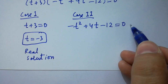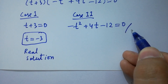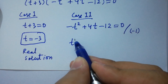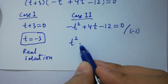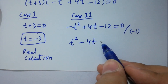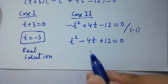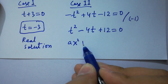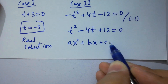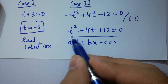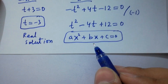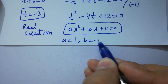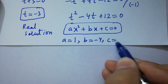From case 2: minus t-squared plus 4t minus 12 equal to 0. Dividing by minus 1, we have t-squared minus 4t plus 12 equal to 0. This is a quadratic equation ax-squared plus bx plus c equal to 0. By corresponding, we have a equal to 1, b equal to minus 4, and c equal to 12.